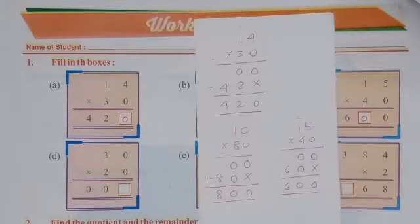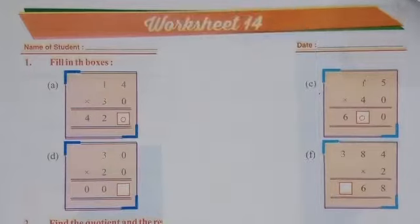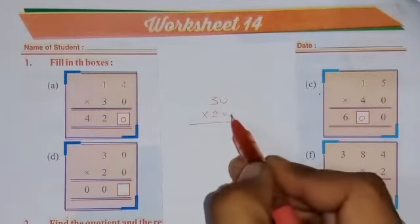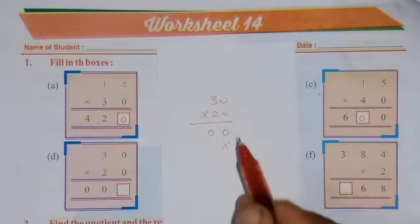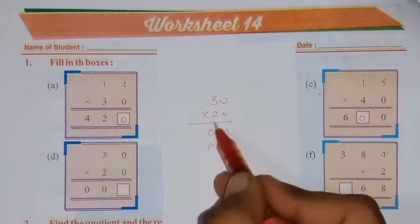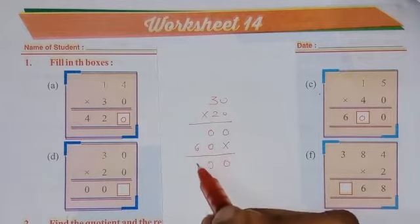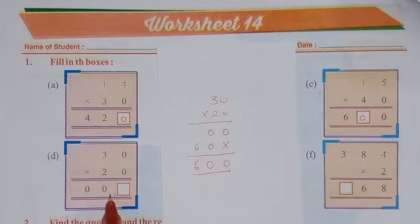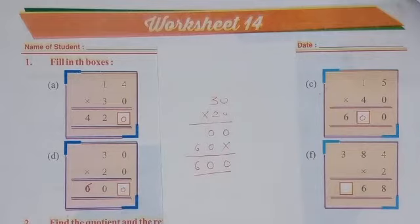See the next question number D. Here numbers are given: 30 into 20. 0 into 0 is 0, 0 into 3 again 0. Put a mark of cross, 2 into 0 is 0, and 2 into 3 is 6. Now add these two numbers: 0, again 0, and this will be 6. So answer will be 600. Here is a misprint. Because answer will be 600, so you have to change this number with 6. 6, 0, 0.